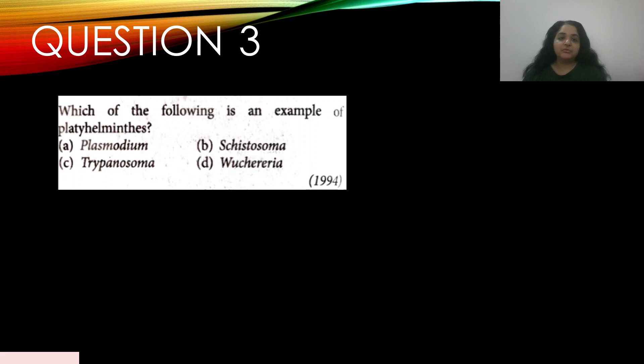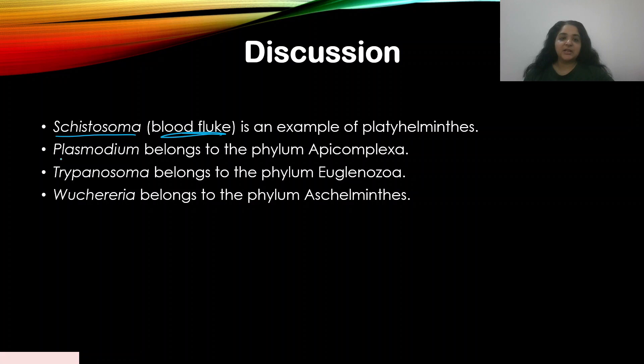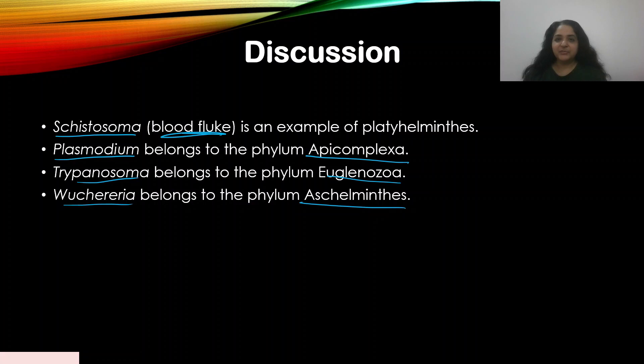Question number three: which of the following is an example of Platyhelminthes? — appeared in 1994 — A) Plasmodium, B) Schistosoma, C) Trypanosoma, D) Wuchereria. Schistosoma is an example of Platyhelminthes, also known as blood fluke. The answer is B. Plasmodium belongs to the phylum Apicomplexa, Trypanosoma to Euglenozoa, and Wuchereria is a nematode belonging to Aschelminthes.